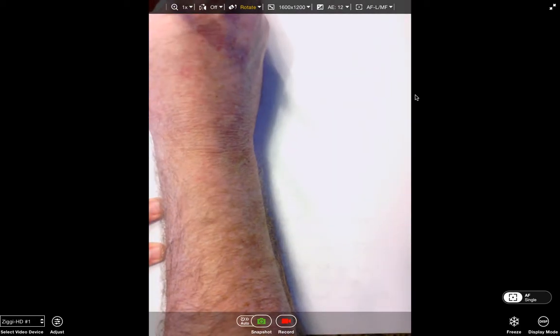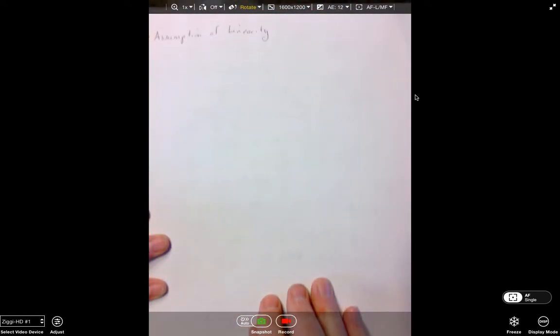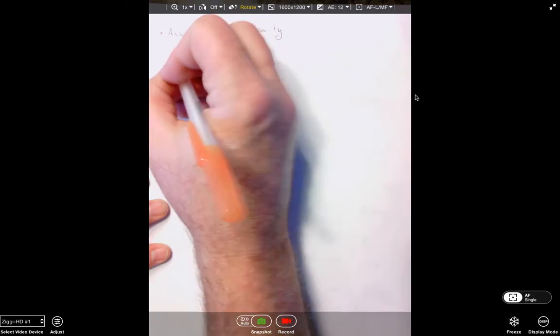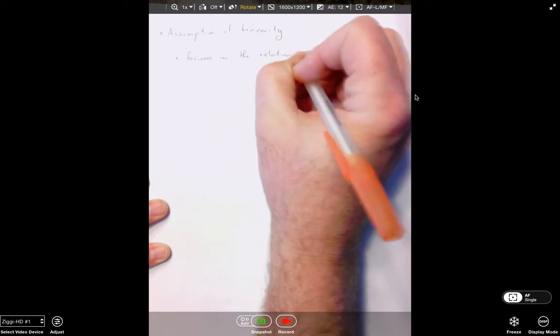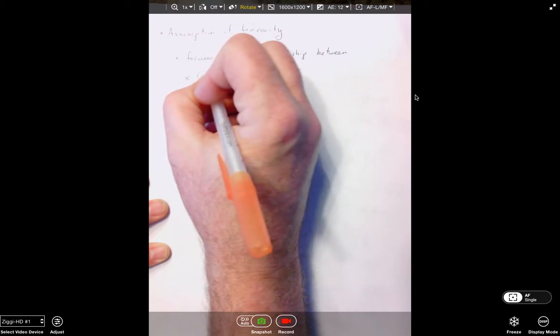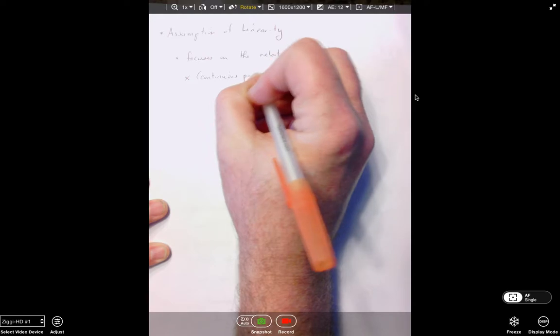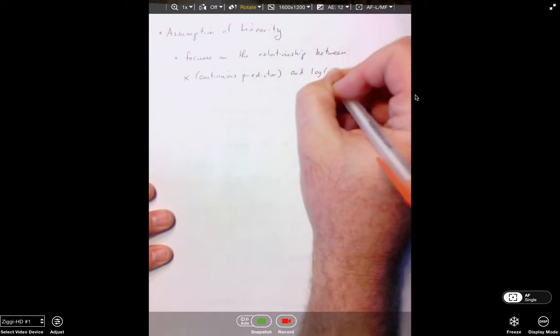So guys, one more thing, actually, the assumption of linearity. You'll notice, kind of going in reverse to what I presented to you in a couple of videos ago. The assumption of linearity focuses on the relationship between, I should say all x's, but predictor by predictor, focuses on the relationship between x and the log of y.